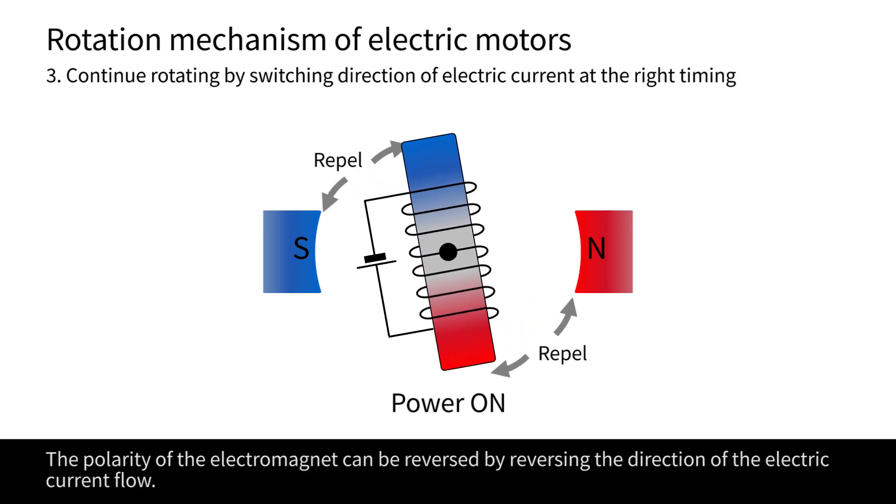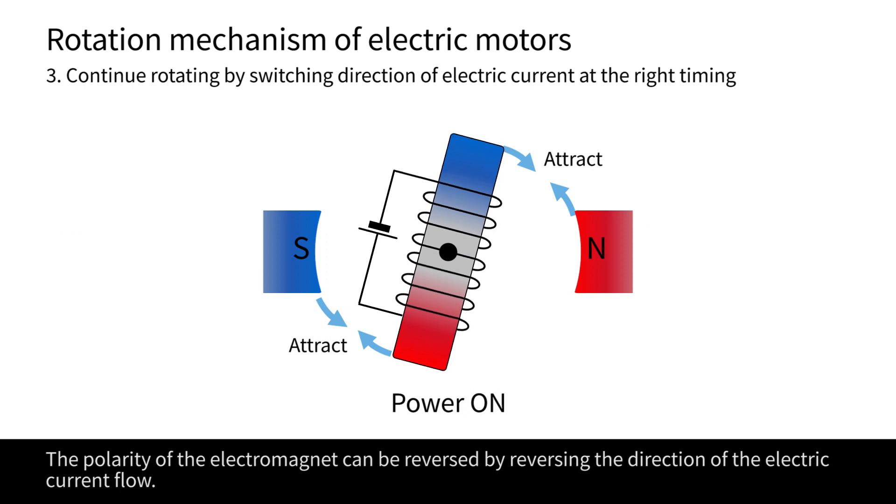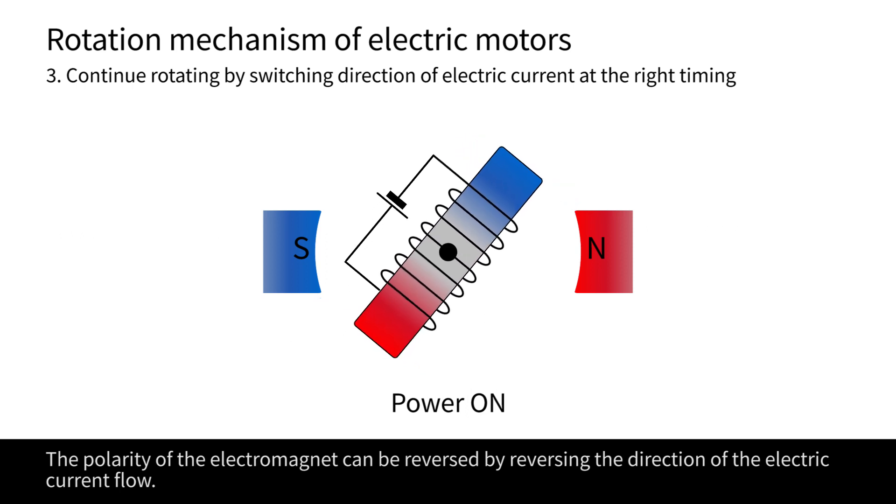The polarity of the electromagnet can be reversed by reversing the direction of the electric current flow.